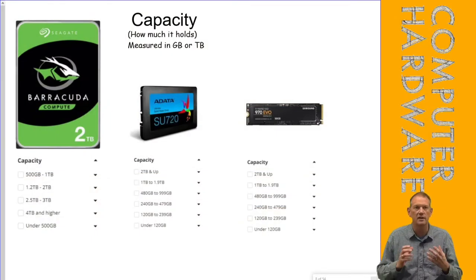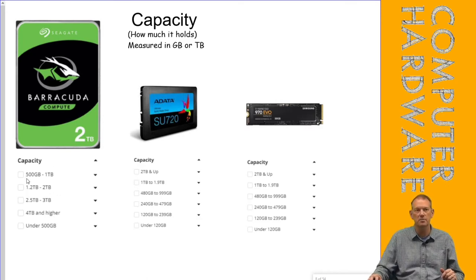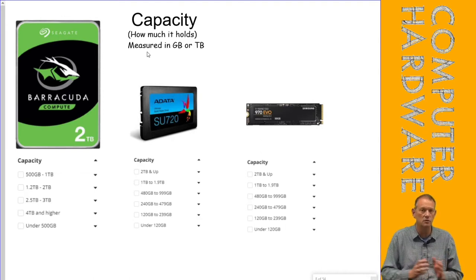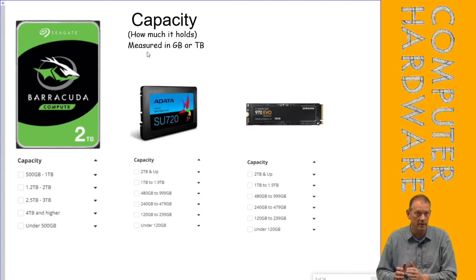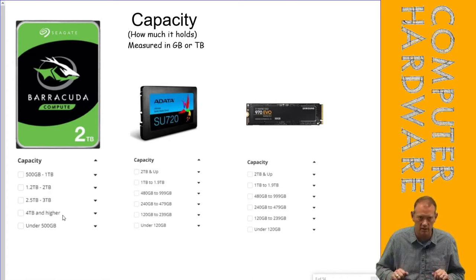The next thing is capacity. Under each of the three categories is the initial breakdown of the new eight categories — they expand further. For a traditional HDD that's 3.5 inches, the capacity breakdowns are 500 GB to 1 TB, 1.2 to 2 TB, 2.5 to 3 TB, and 4 TB and higher. They go very high — we have a couple of 12 TB drives in our surveillance systems here at National Trail.